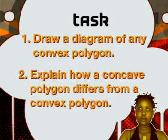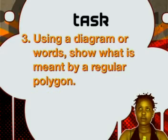Number one: draw a diagram of any convex polygon. Number two: explain how a concave polygon differs from a convex polygon. Number three: using a diagram or words, show what is meant by a regular polygon. It is important to always use the correct mathematical term when you are talking maths. So until the next lesson, keep looking for shapes and go well.